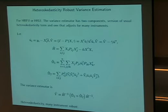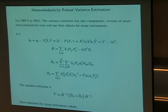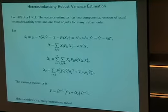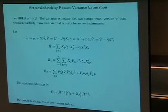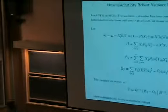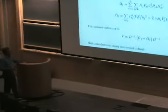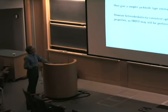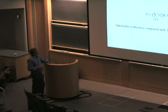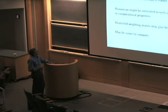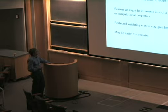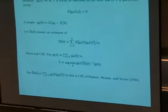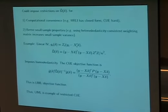For variance estimation, the general result is a sandwich estimator with three terms: two bread terms that are the same and a meat term in the middle. We show how to derive this in the paper. We also generalize to the generalized method of moments, which handles nonlinear models as well as linear models.